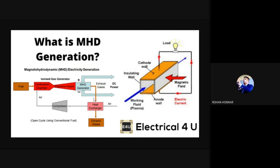In the MHD circuit, the plasma working fluid flows through a heat exchanger, compressor, combustion chamber, and expansion nozzle. The MHD generator provides a DC form of electricity.